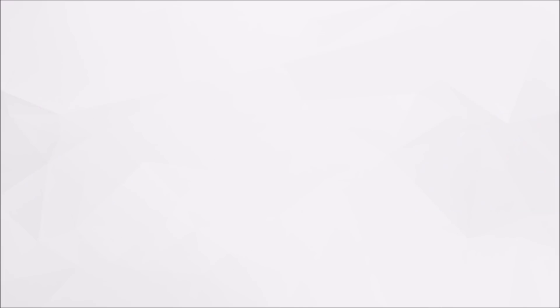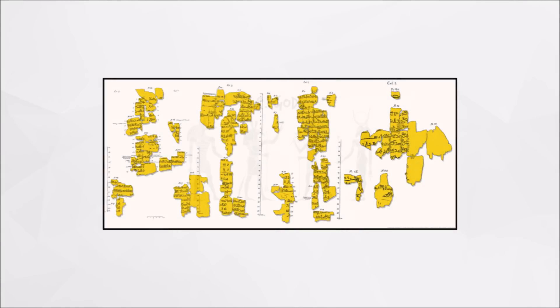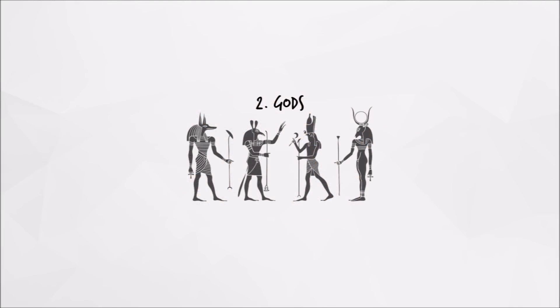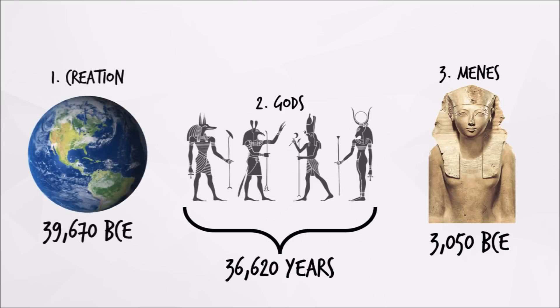Similar to the Sumerians, the Egyptians had a king list. Their list describes a period when only gods ruled, and this period lasted 36,620 years until the first dated king, Menes, who ruled starting at 3050 BCE. Therefore, the creation of the earth would be dated around 39,670 BCE.